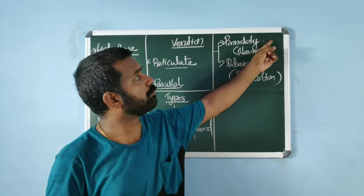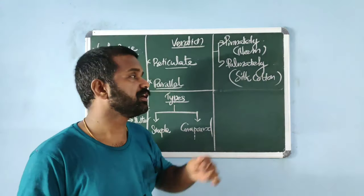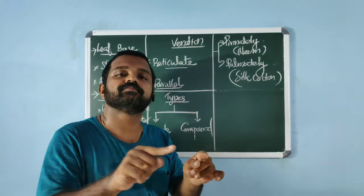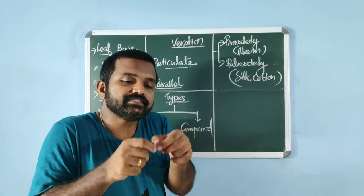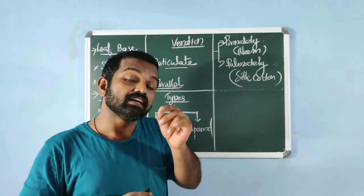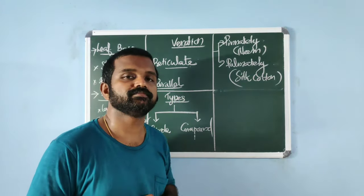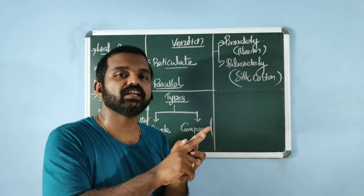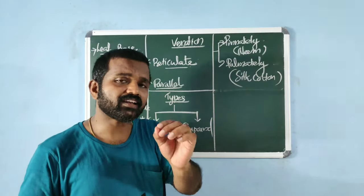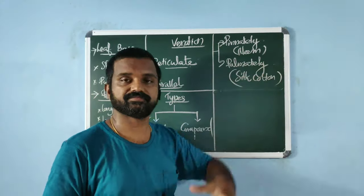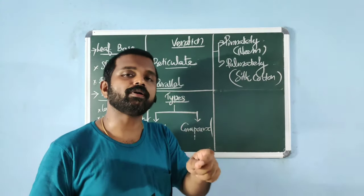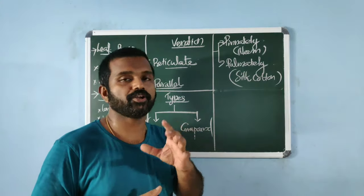In pinnately compound leaves, there is a main axis called the rachis, which represents the midrib. The axillary bud is seen at the axil of the leaf, not in the axil of leaflets. Example: neem. In palmately compound leaves, leaflets arise from a common point at the tip of the petiole. Example: silk cotton tree.